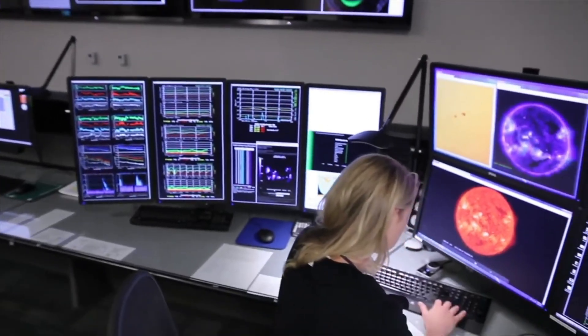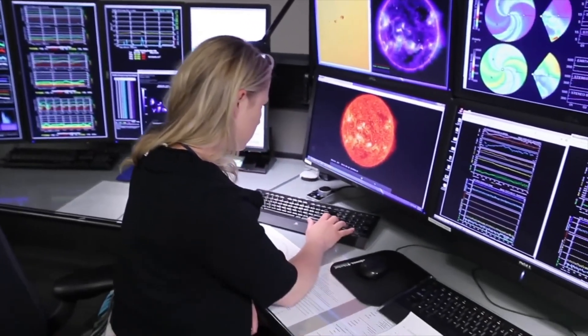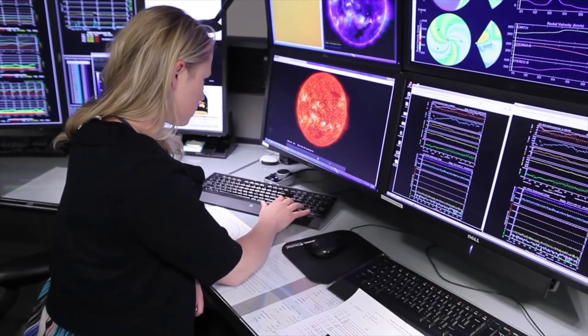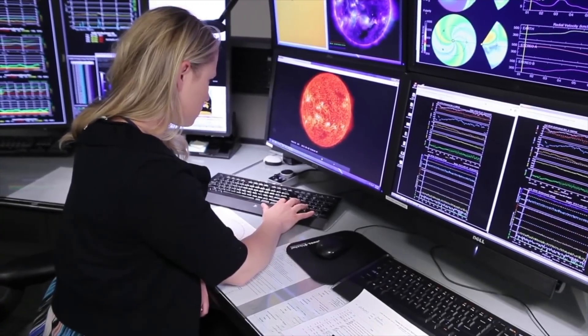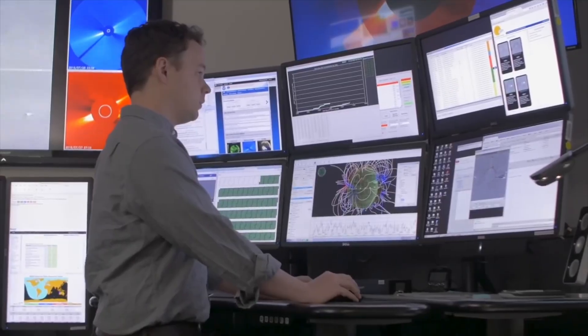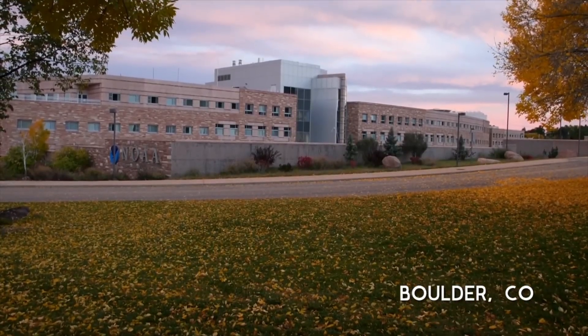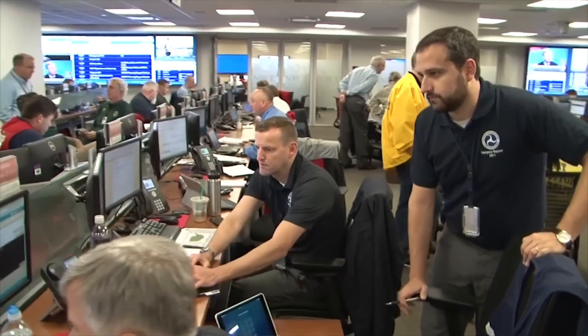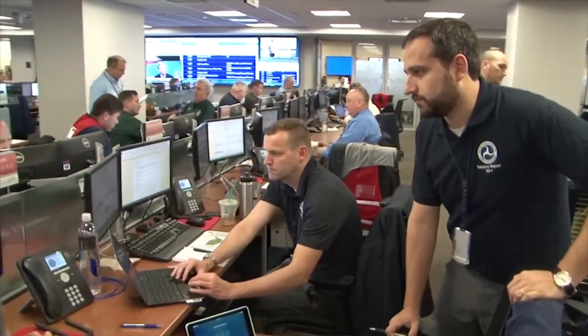There's a strange beauty in that truth. The same storms that threaten our satellites are the storms that paint the skies with auroras stretching from horizon to horizon. The same energy that could scramble our power grids is the energy that once ignited life on Earth. The sun creates and destroys, calms and erupts, and we orbit at its mercy.